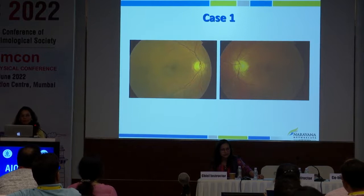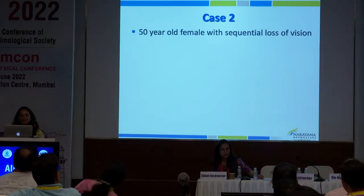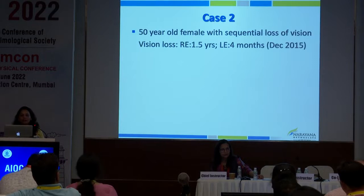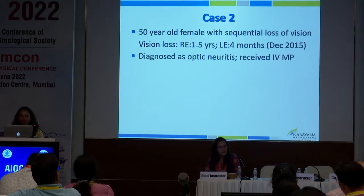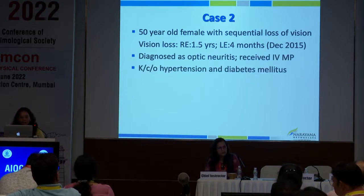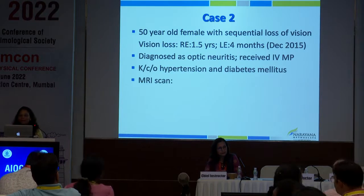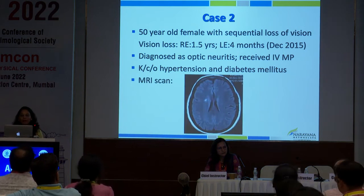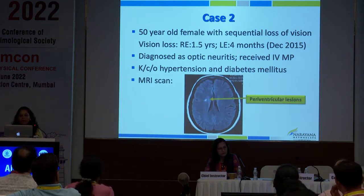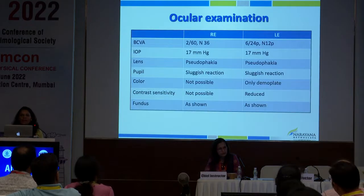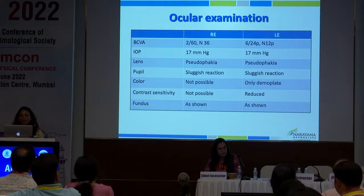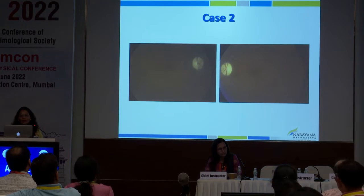Case two is a 50-year-old female with sequential loss of vision — first in the right eye about 1.5 years ago, then the left eye only four months ago. Diagnosed as optic neuritis, she was receiving IVMP. She was a known case of hypertension and diabetes mellitus. IVMP was given based on one periventricular lesion. Vision in the right eye was significantly low due to optic atrophy at 2/60, and left eye was 6/24. Pupils were sluggish in both eyes.